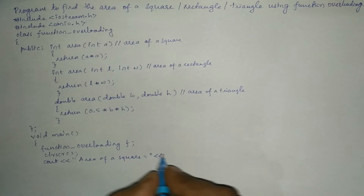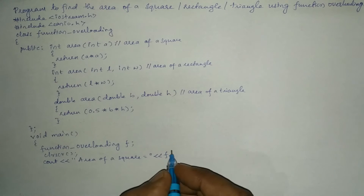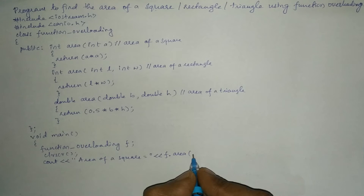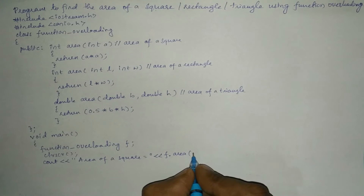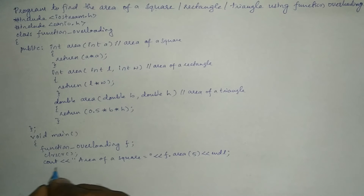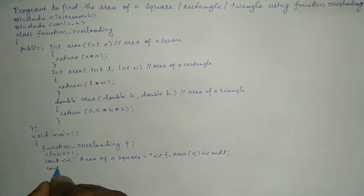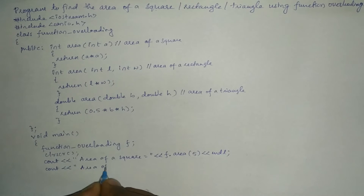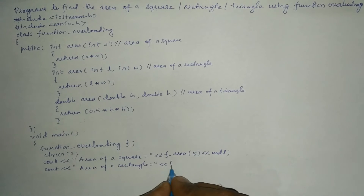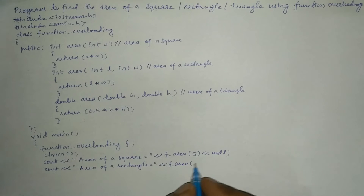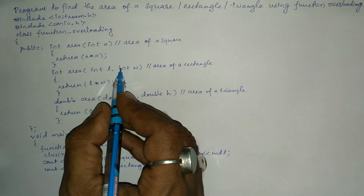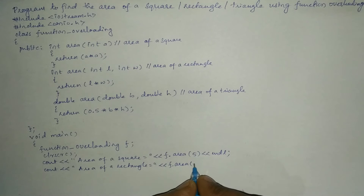Is equal to. With the help of this object we are going to call each function by passing respective arguments. So f.area() — here I am going to pass only one argument because we want to find the area of a square, for example 5, followed by endl so the cursor moves to the next line. Then cout for area of a rectangle is equal to f.area() again, but with two arguments of integer type.